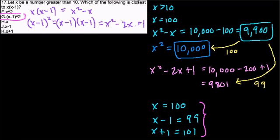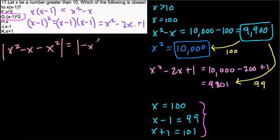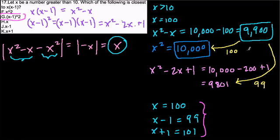To measure how far something is from our target value, we use absolute value and subtract. Our original value is x squared minus x. If we subtract choice F, which is x squared: we get the absolute value of x squared minus x minus x squared, which simplifies to the absolute value of negative x. Since x is greater than 10 and positive, that just equals x. So the distance between the original and choice F is exactly x.